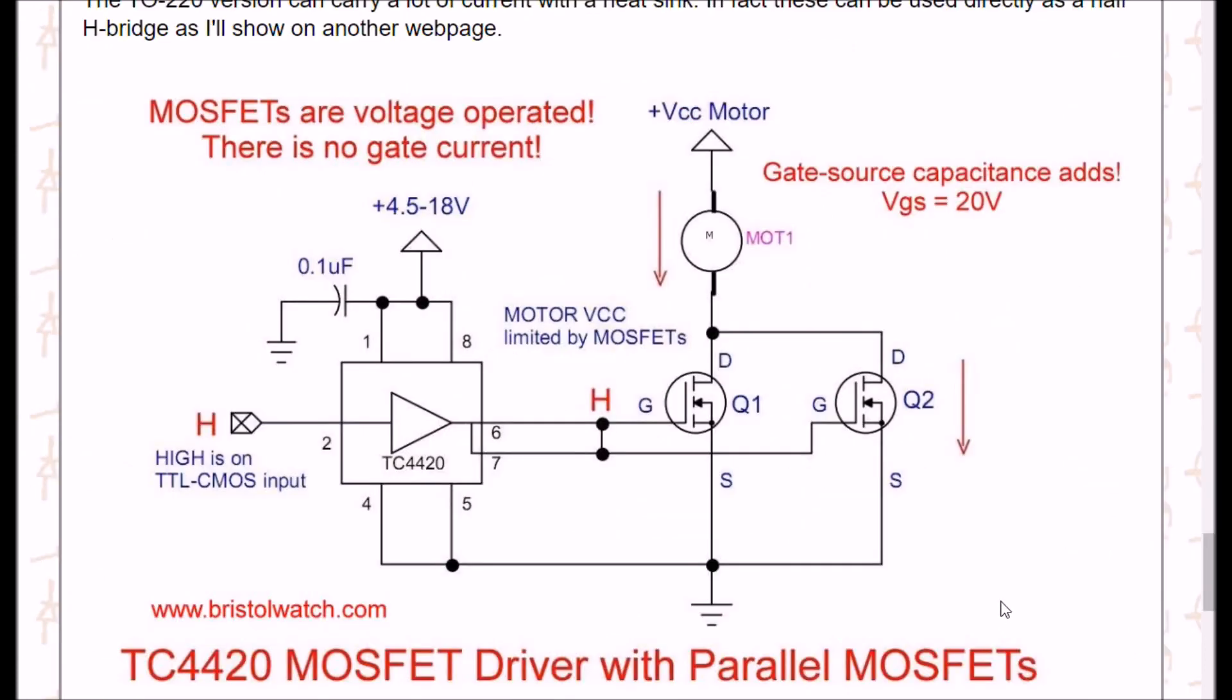In my previous video, I showed how to cut on a couple of MOSFETs using a TC4420. This would be what I call a low side switch. It switches the motor to ground, and of course, the motor runs back to VCC.